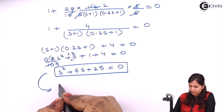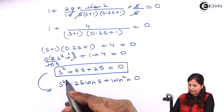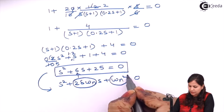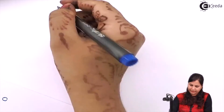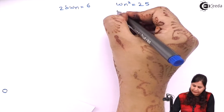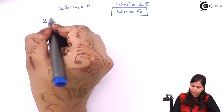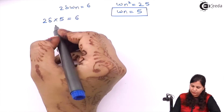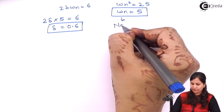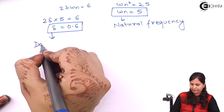Comparing this with the standard second-order equation s² + 2δωn·s + ωn² = 0, we get the coefficient of s as 6 and ωn² = 25. So 2δωn = 6 and ωn² = 25, giving ωn = 5 rad/s. Substituting back: 2δ × 5 = 6, so the damping ratio δ = 0.6.